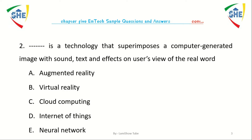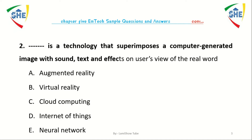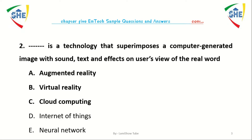Question number 2: Dash is a technology that is offered — imposes a computer-generated image with sound, text, and effects on a user's view of the real world. Options: A) Augmented reality, B) Virtual reality, C) Cloud computing, D) Internet of things.